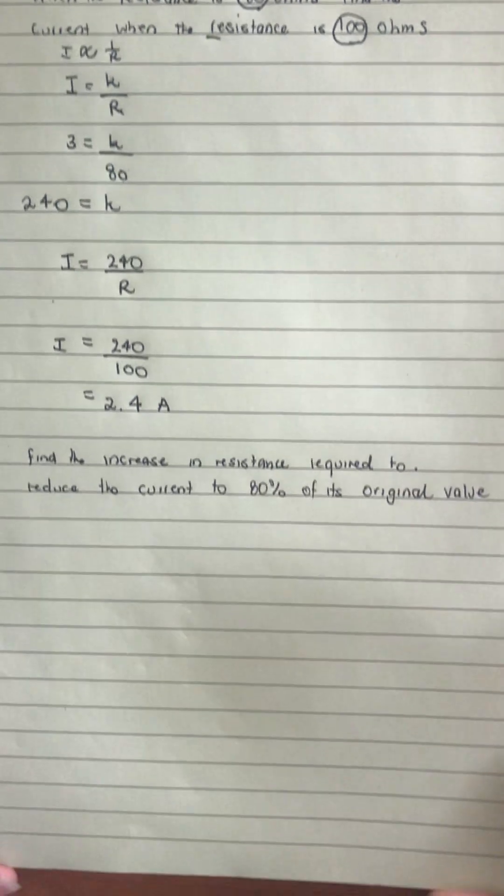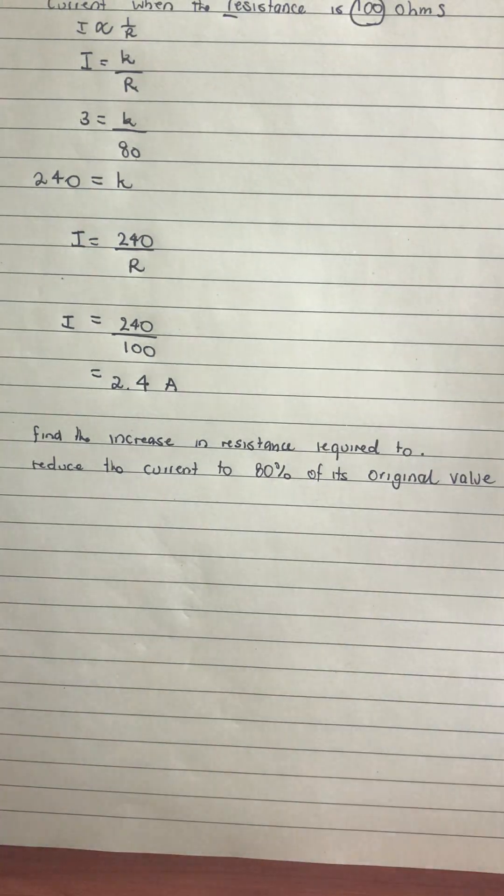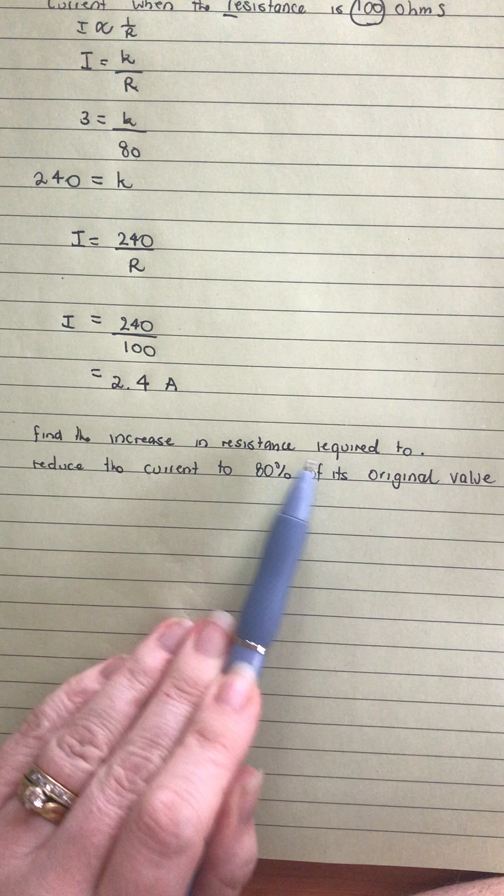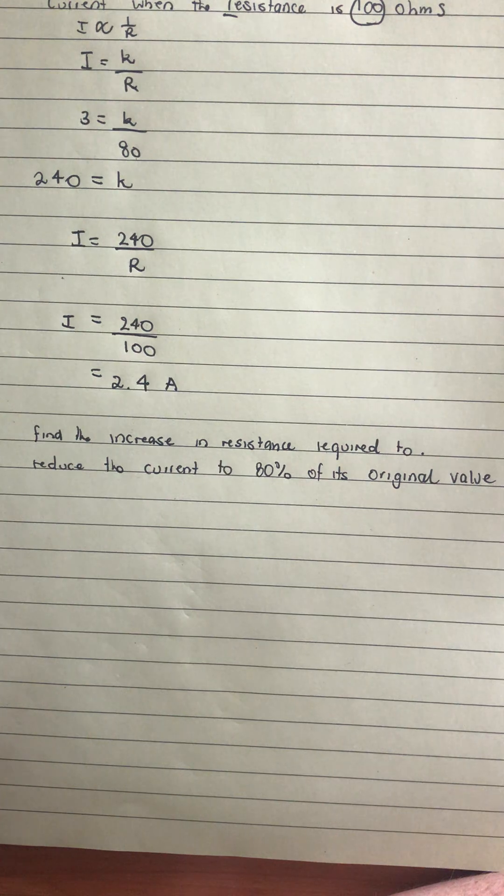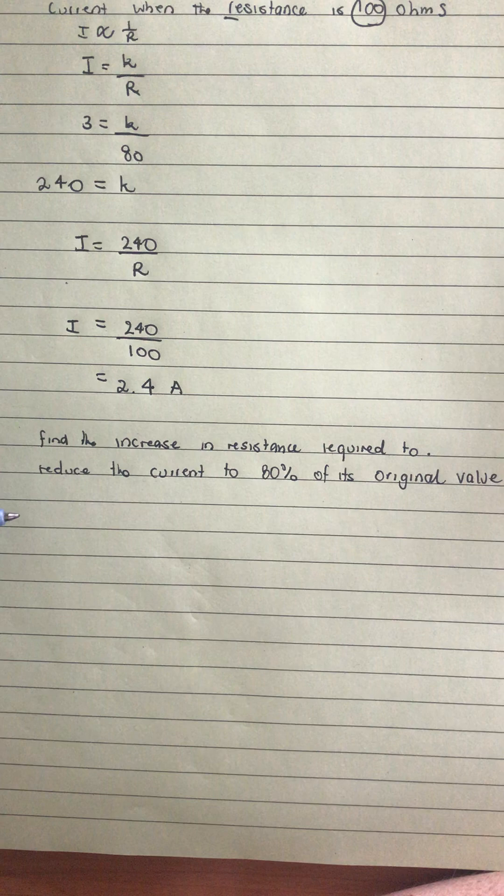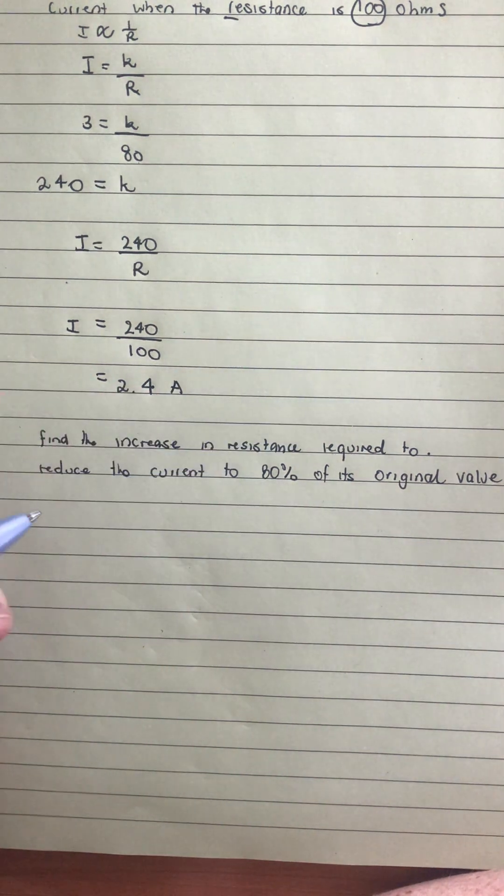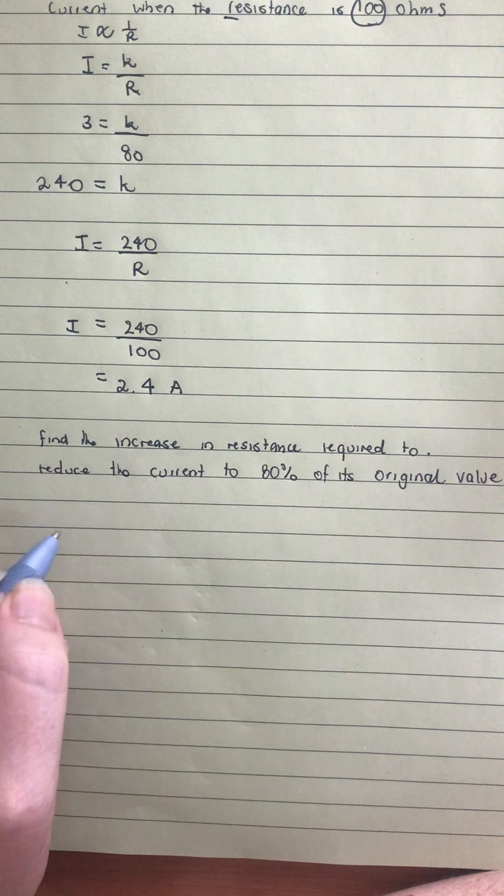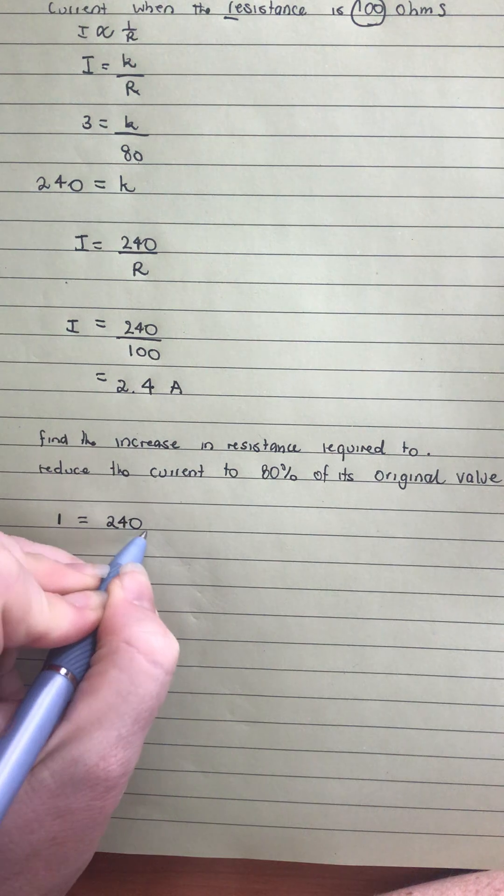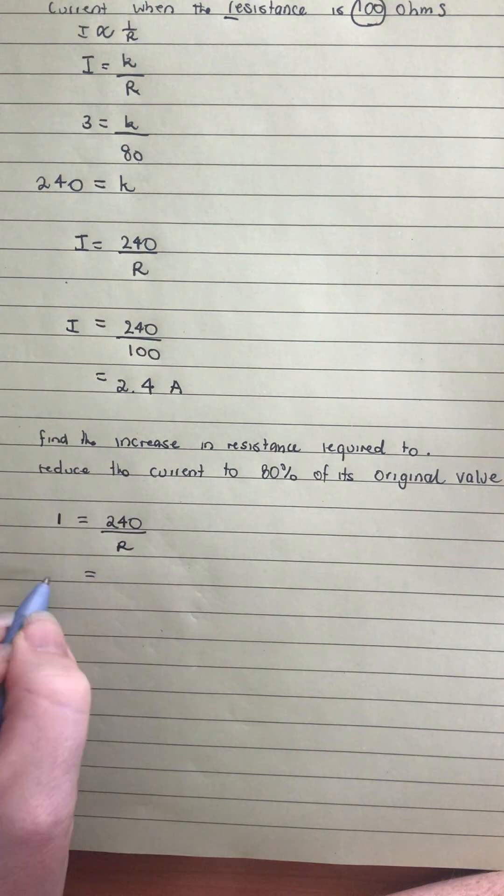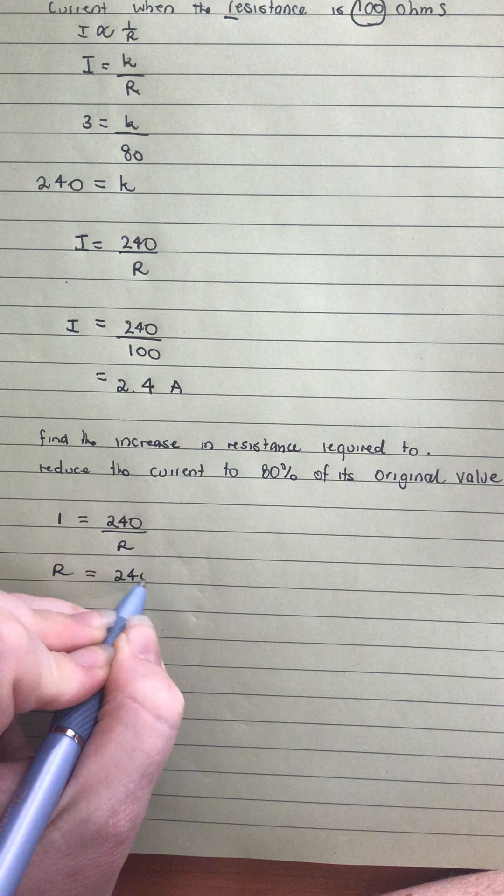Now, in the second part, it talks about percentage increases. It says, find the increase in resistance required to reduce the current to 80% of its original. We'll start with saying, okay, if my original current was 1, then 80% of that would be 0.8. You could also use 100 as an option as well. If you've got 100, and then 80. So we'll sub in the 1 to start with. If we sub in a 1 for i, then we have 240 over r.